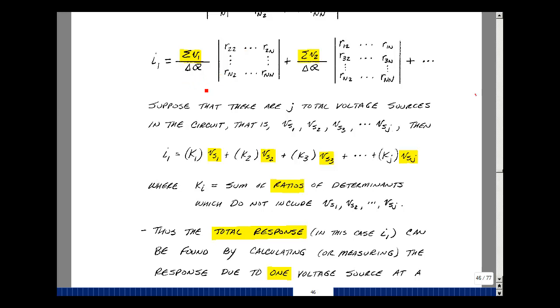I'm going to multiply each voltage source that's in this summation by a ratio of two determinants. Those determinants do not have any voltage sources in them. So if V sub S1 shows up in this summation and shows up in this summation, then I'm going to be adding together a ratio of determinants times that V sub S1. And that's true for V sub S2 all the way through V sub Sj.